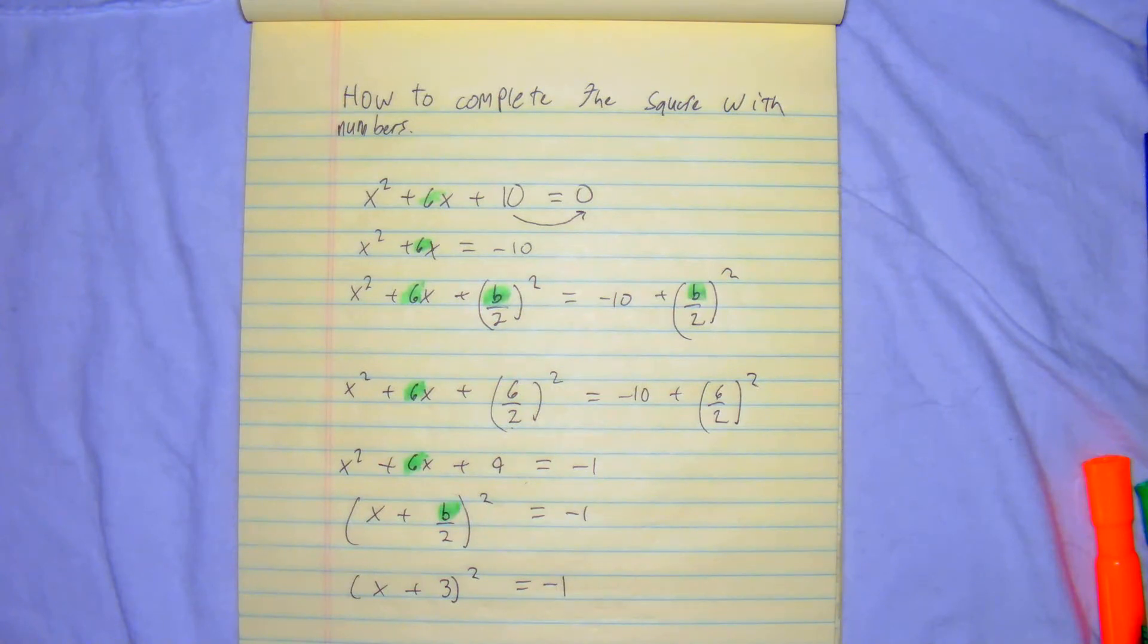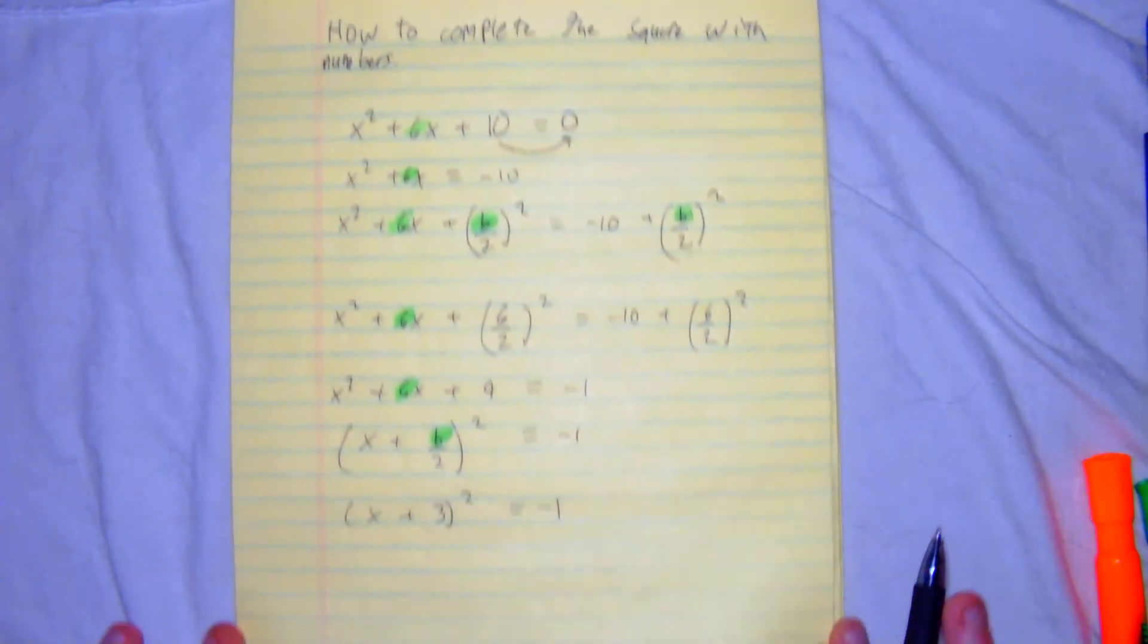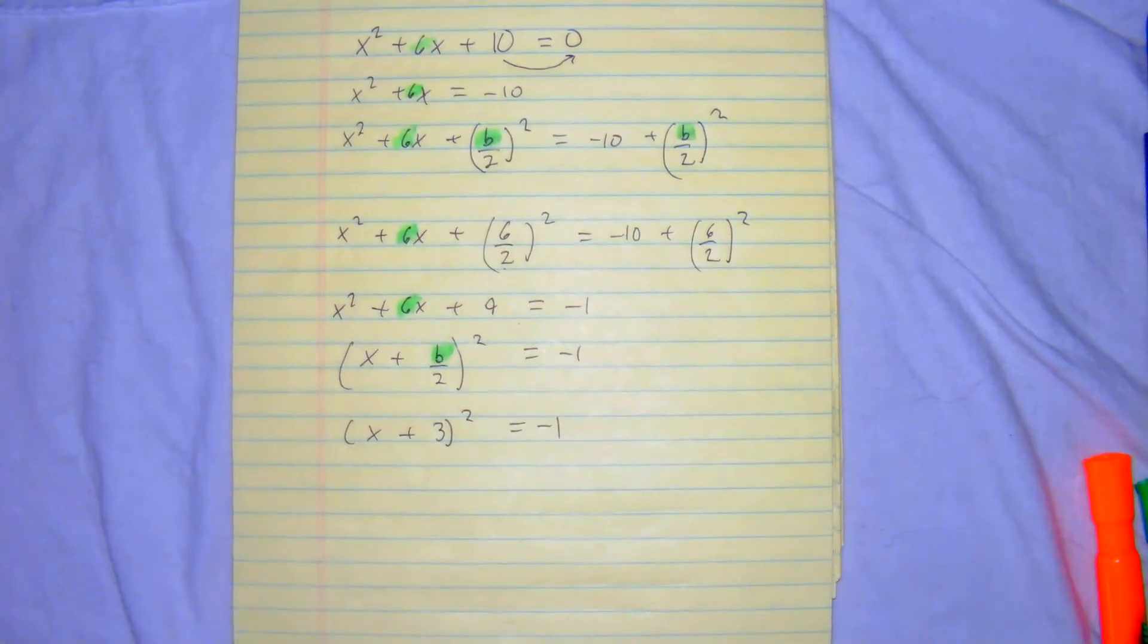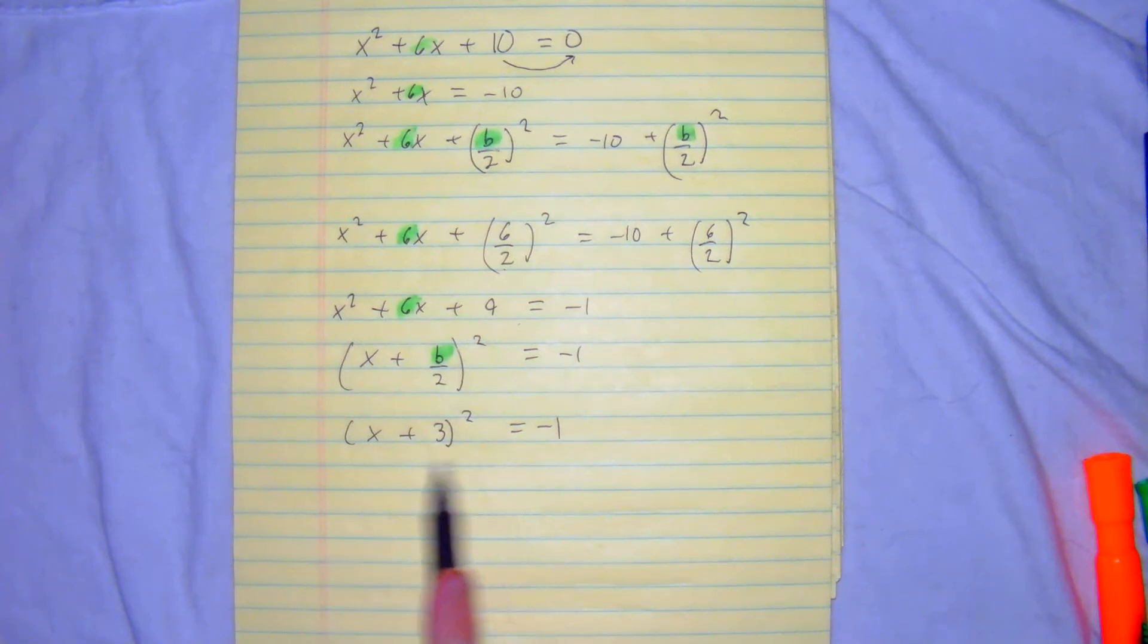So what we have here is x plus 3 squared equals negative 1, which would not give us a real solution, which we haven't even talked about. But if you wanted to find whatever values of x would be, you just square root it and subtract 3. And you got it from there.